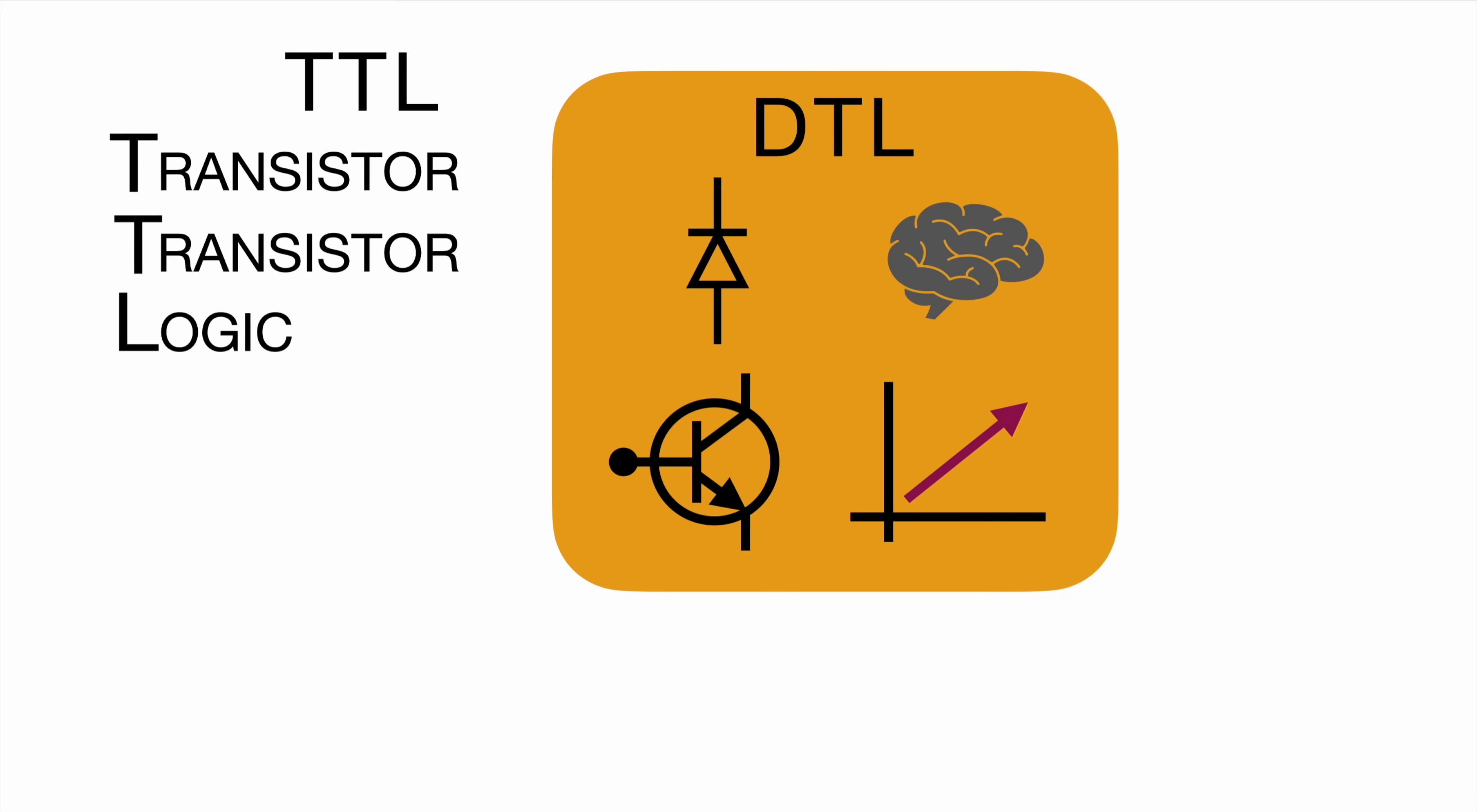While DTL used a diode for the logic part and a transistor to amplify the signal, TTL was transitioning to also using transistors for the logic part, using serial transistors to build NAND gates and using NAND gates to build logic gates.